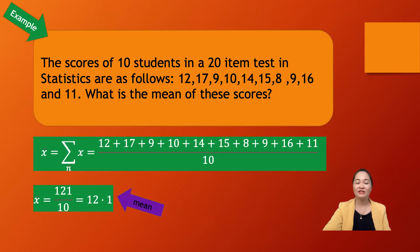The test scores of 10 students in a 20-item test in statistics are as follows: 12, 17, 9, 10, 14, 15, 8, 9, 16, and 11. What is the mean of these scores? To solve, x-bar is equal to the summation of x over the total n, so we are going to add all the values.